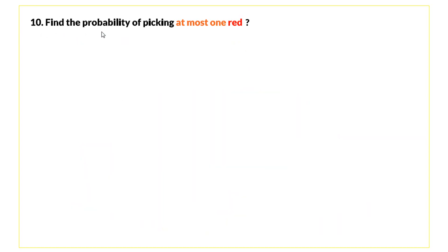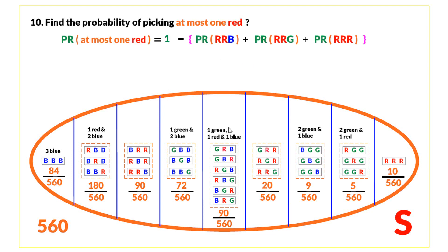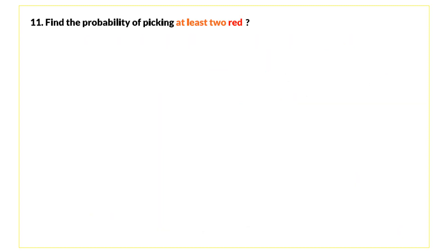Question ten: find the probability of picking at most one red. We may pick one red or no reds. Rather than summing those events directly, we use the complement: the complement consists of picking three reds, picking two reds and one green, or picking two reds and one blue. We subtract their total probability from one and get 0.78.